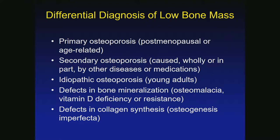When we look at the overall differential diagnosis, there is primary osteoporosis, secondary caused by other diseases, idiopathic if we can't find a reason in a young adult, defects in mineralization like osteomalacia and vitamin D deficiency, and defects in collagen synthesis like osteogenesis imperfecta. All of endocrinology is like being a detective. Someone comes in with a problem and you're looking for the evidence — same thing with bone density.